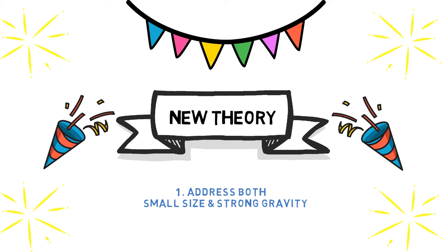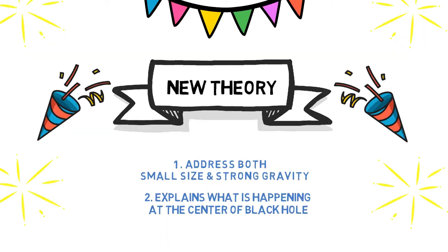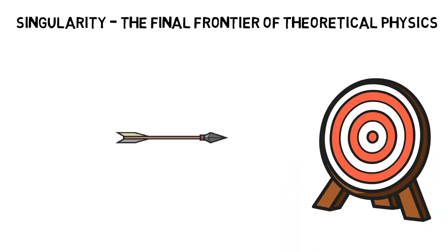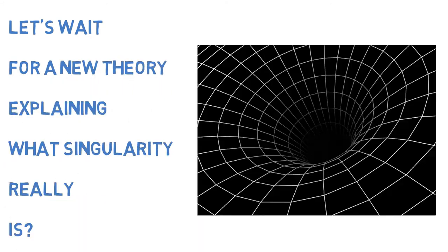Rather, it explains what is actually happening at the center of a black hole. In this sense, the interiors of black holes are the final frontier for theoretical physics. Everything else in the universe can be accurately described, at least in principle, using our current theories.